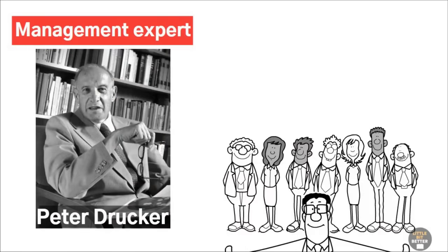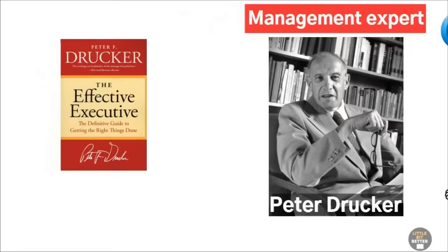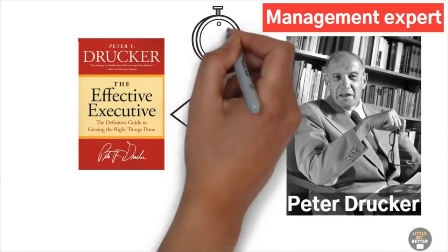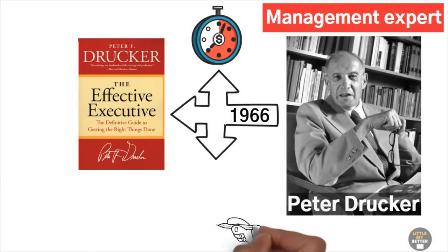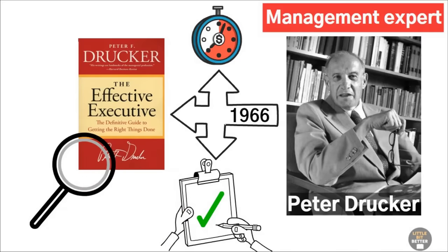He coached influential business leaders at famous companies such as Procter & Gamble, IBM, General Electric, and Intel. In 1966, he wrote this book, combining all his knowledge about effectiveness, time management, and peak performance. I recently read the book to increase my own effectiveness, and here is a summary of the five key lessons.